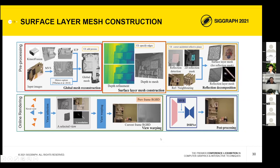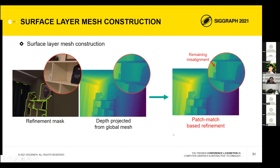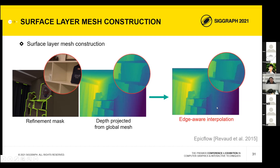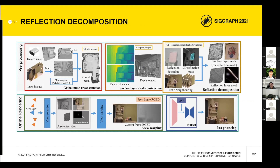We can see some mismatch between the geometry edge and the image edge, so we do refinement — first removing misalignment between the mesh and the image edge, then doing edge-aware optimization to align the geometry and image edges. With the refined geometry, we construct the surface layer mesh. The last step in geometry processing is the two-layer representation reconstruction.